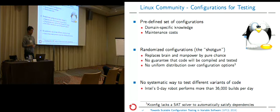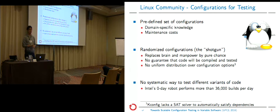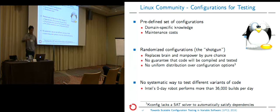The problem with predefined configurations is that it requires a lot of domain-specific knowledge. Some developers may also maintain their own configurations to test their subsystem, which implies high maintenance costs. The second way is what I call the 'shotgun' — using randomized configurations. The idea is to generate randomized configurations and just shoot around as long as possible, hoping to finally hit something usable. It replaces brain and manpower with pure chance, but there is no guarantee that the code we're interested in will be compiled. Also, there is no uniform distribution over the configuration space.